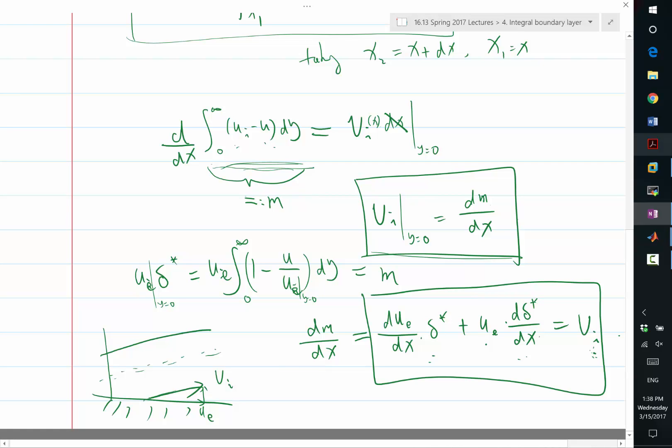So this equation by itself is not enough to really solve for the boundary layer because we don't know vi. Without knowing vi, we don't know the growth of delta star. We know due dx usually if we know the outside flow, but this is just relating two terms together. It's not sufficient to solve for delta star.